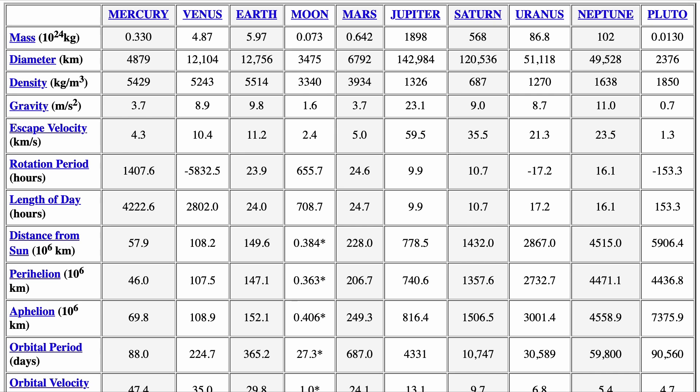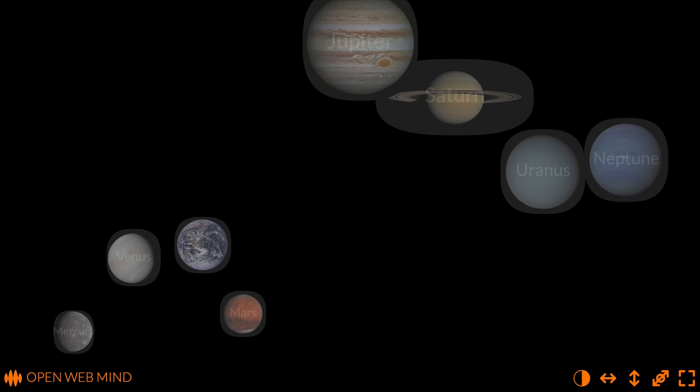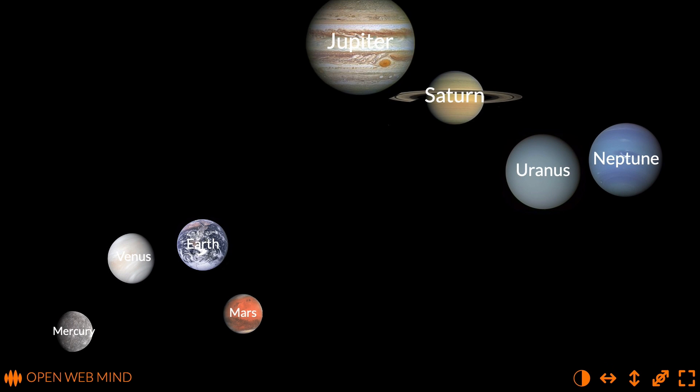The trouble with my visualisation of atoms is that it took me a long time to create it. With the open web mind, it won't take so long. Here are some numbers about planets from NASA. A few months back, I imprinted a mind with the data in that table and created a visualisation of NASA's numbers about planets, which I also posted on Things Made Thinkable.